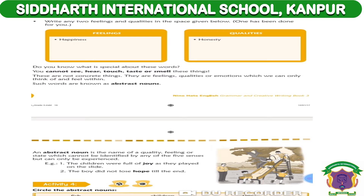So I think you now know very well what an abstract noun is. An abstract noun is the name of a quality, feeling, or state which cannot be identified by — or touched, smelled, seen, or heard by — the sense organs of the body. Understood?